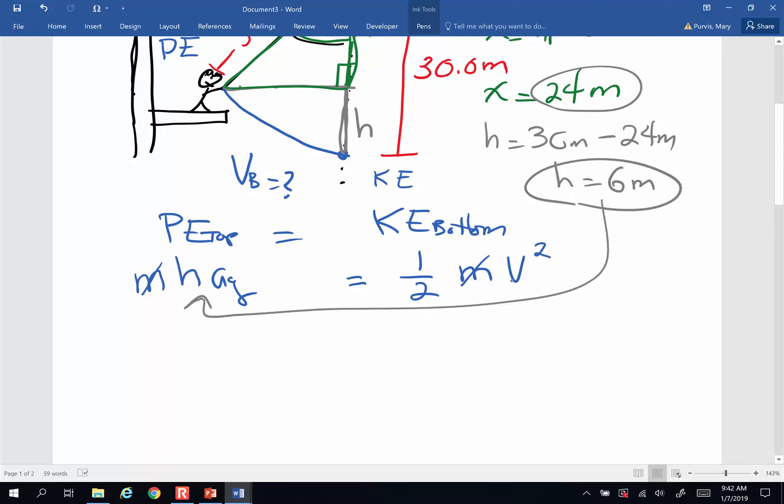And I'm solving for velocity. So velocity will be equal to the square root of 2 times height times acceleration of gravity. Square root of 2 times my change in height, 6 meters, times 9.8 meters per second squared. And when I do the math, the velocity at the bottom of that arc, I get 10.8 meters per second.